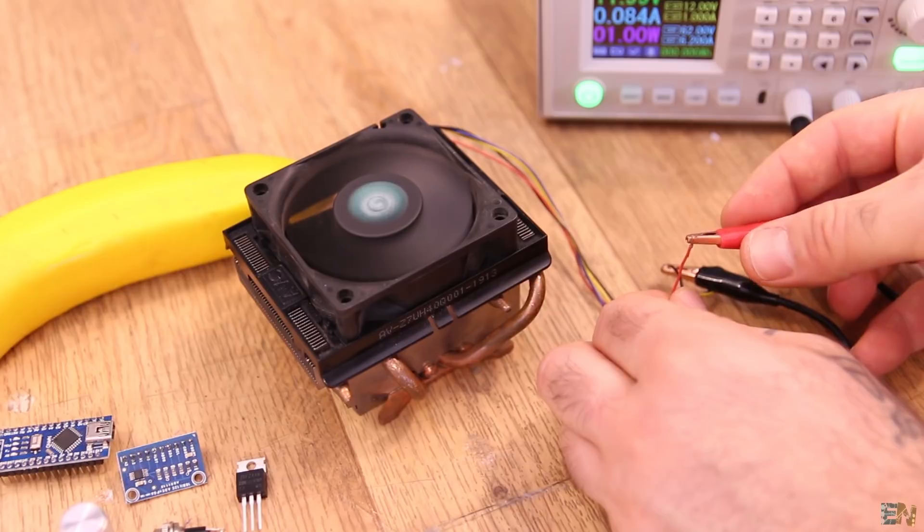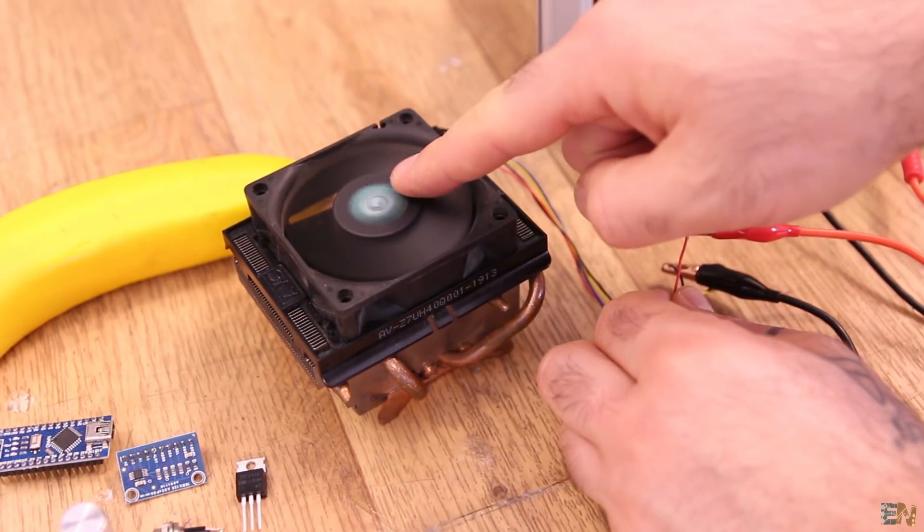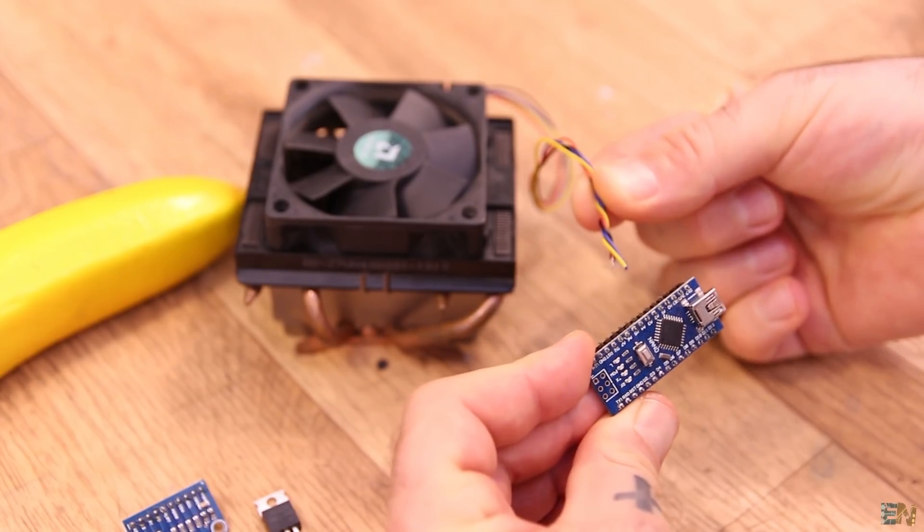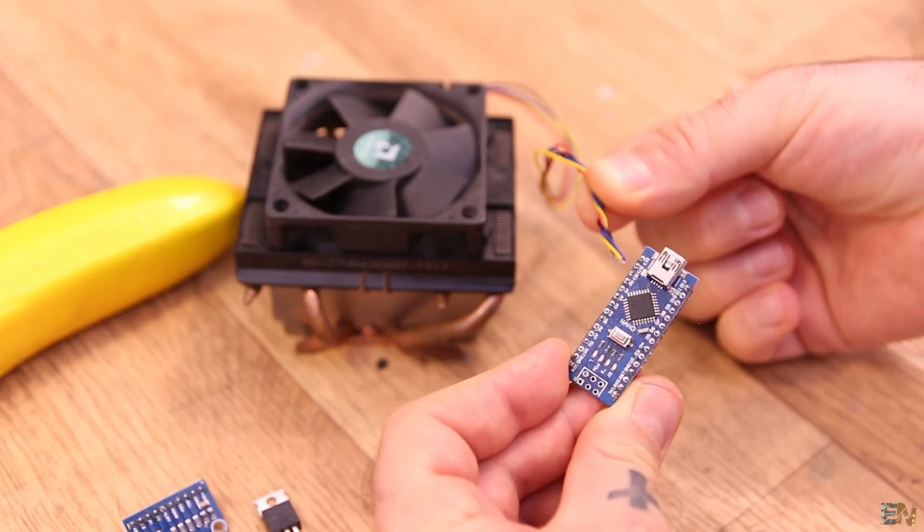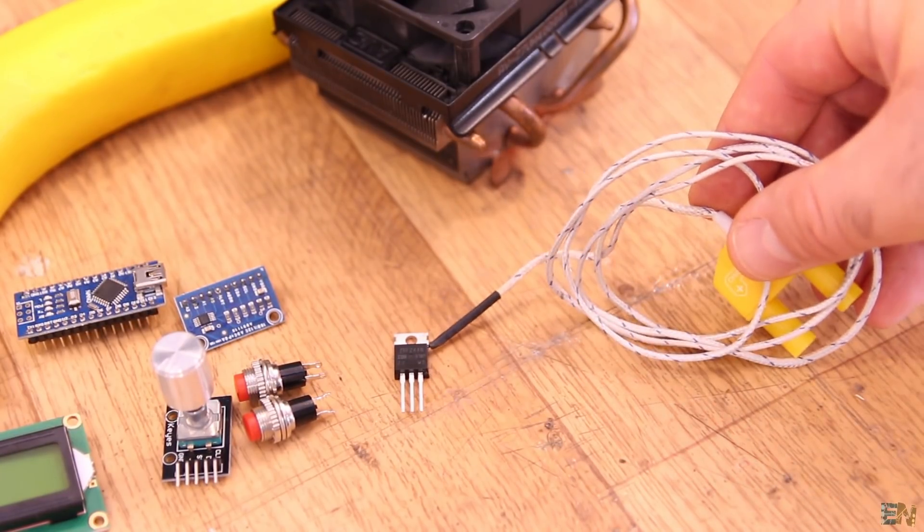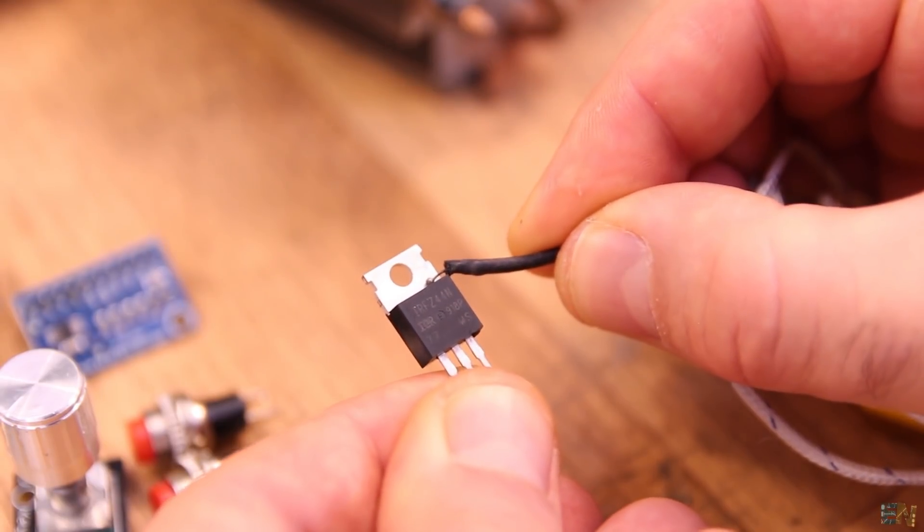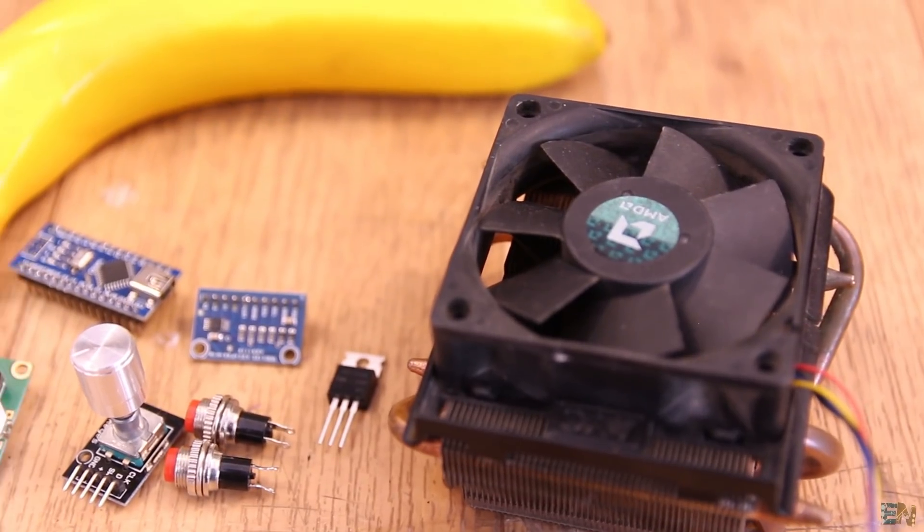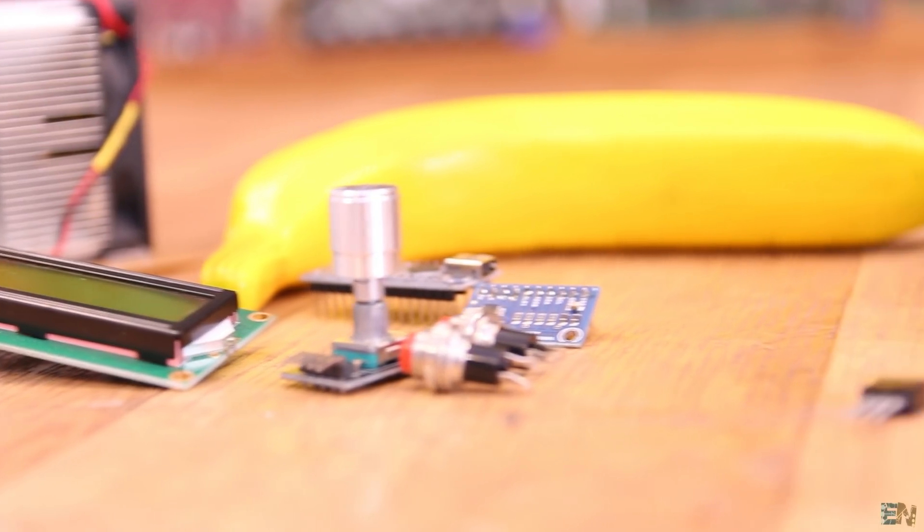We could also control the speed of this fan using a PWM signal from the Arduino, so when there is no power connected, the fan will stay turned off. We could even add a temperature sensor on top of the MOSFET, so we could activate the fan only when needed, but for now I will have it always turned on. Now for the special part of this project.